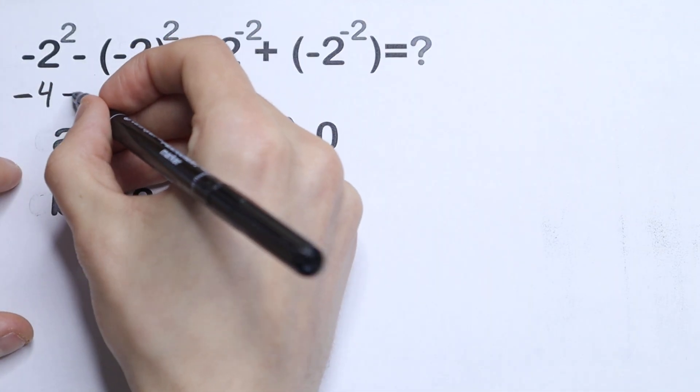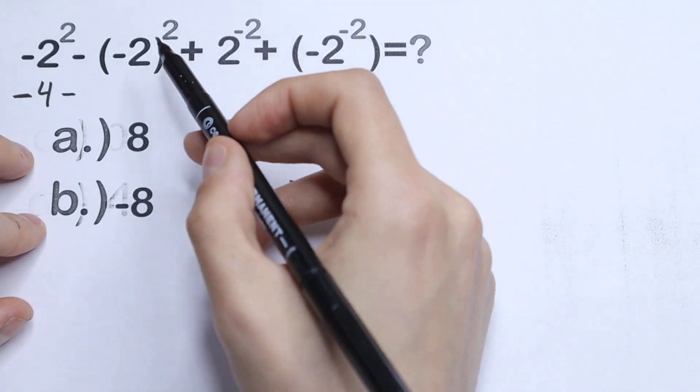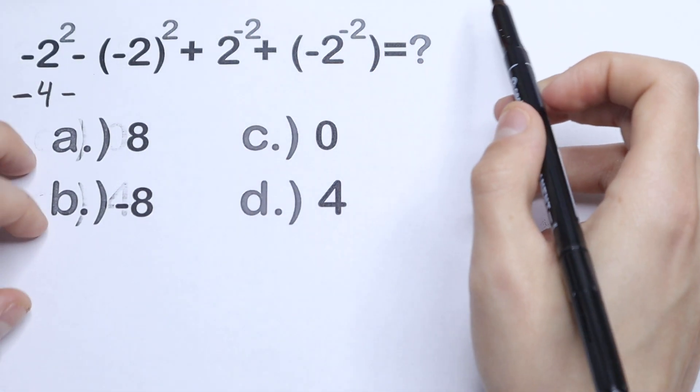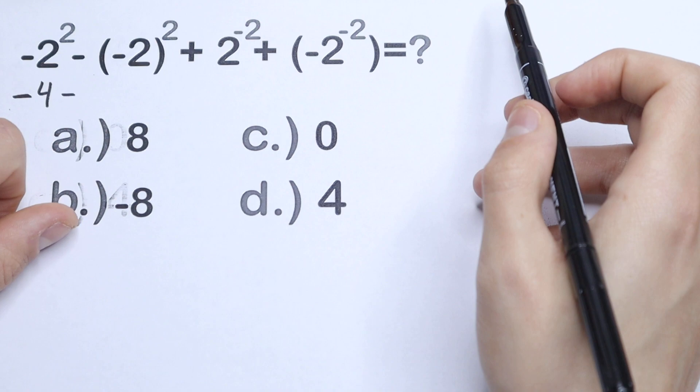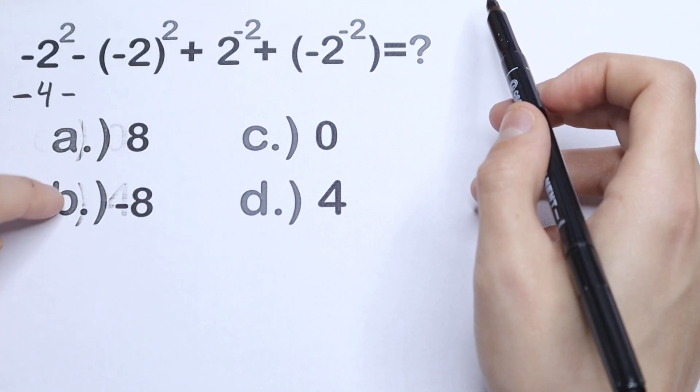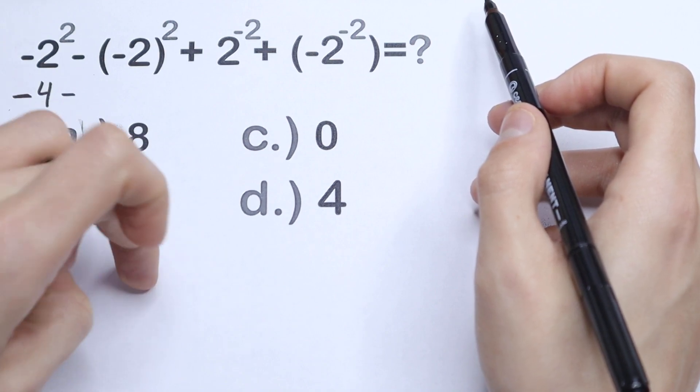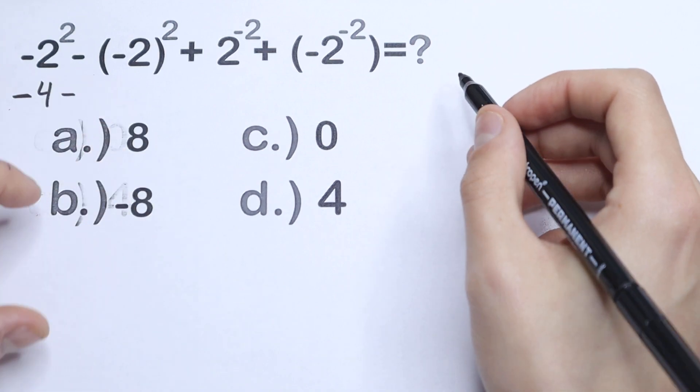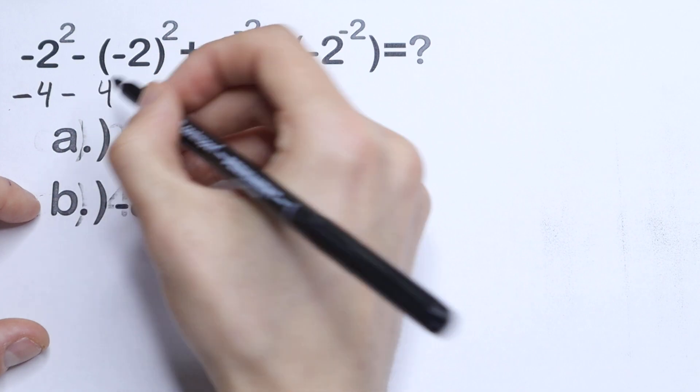Take a look right here. Let's bring this minus. But right here we have a different case. We raise (-2) to the second power. Not only 2, we raise (-2) to the second power. (-2)² will be (-2) times (-2), which is equal to 4. So -4 - 4.